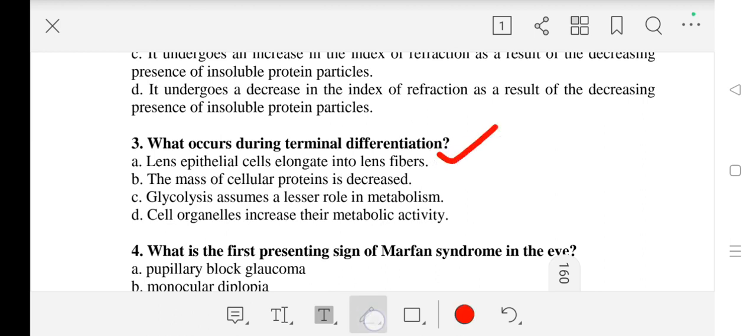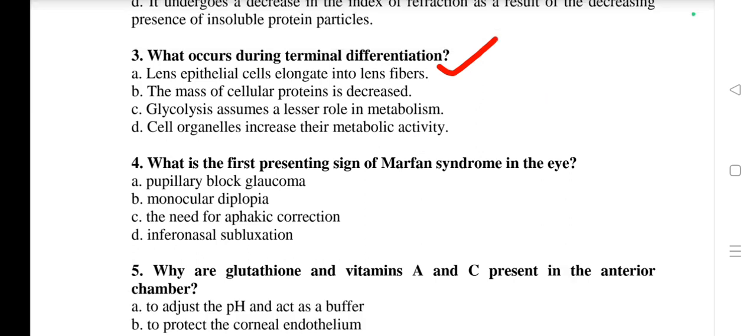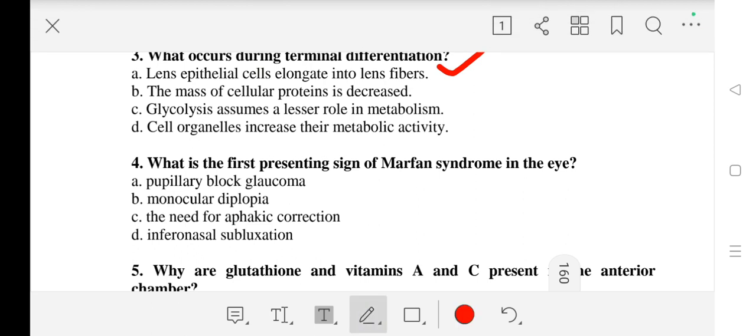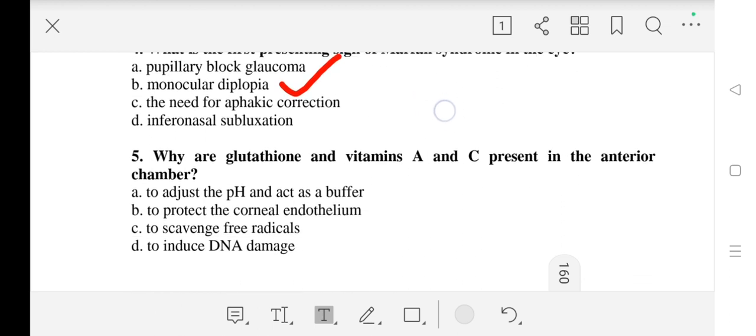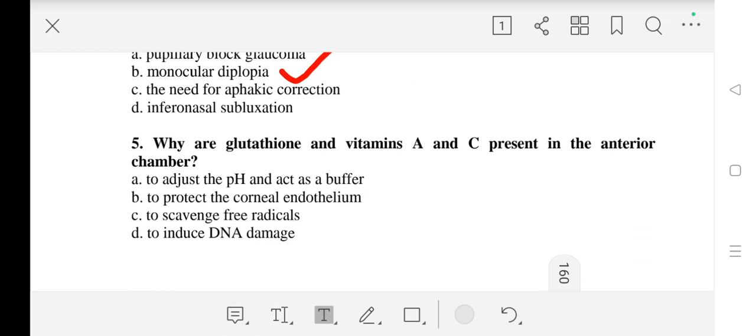Question number 4: What is the first presenting sign of Marfan syndrome in the eye? Our correct answer is monocular diplopia. Question number 5: What are glutathione and vitamins A and C present in the anterior chamber? Our answer is C - to scavenge free radicals.